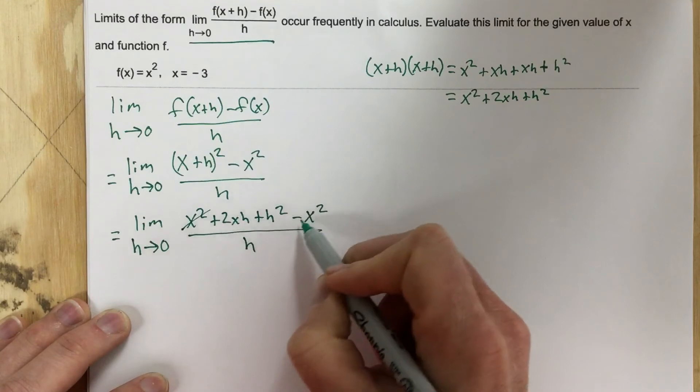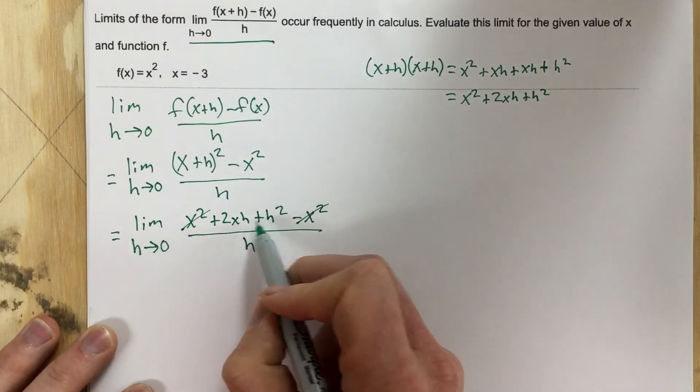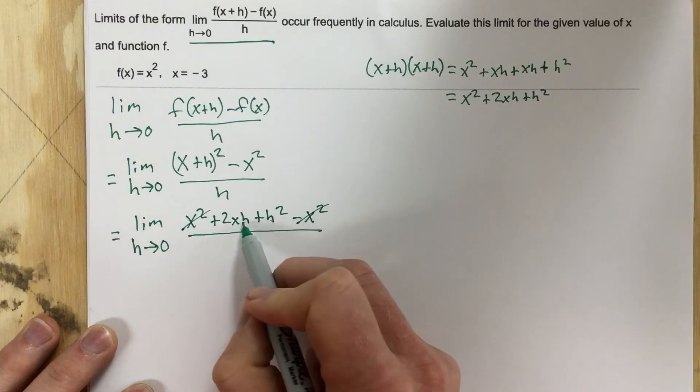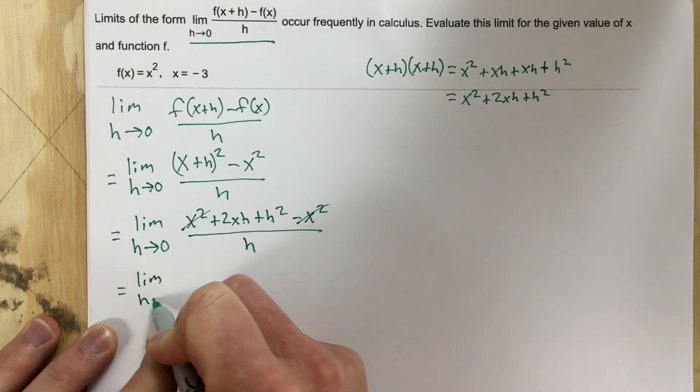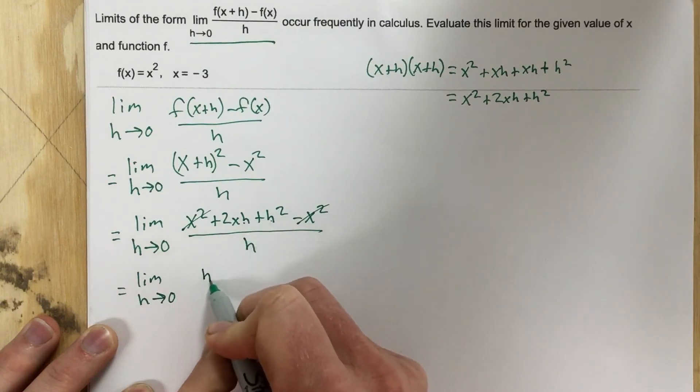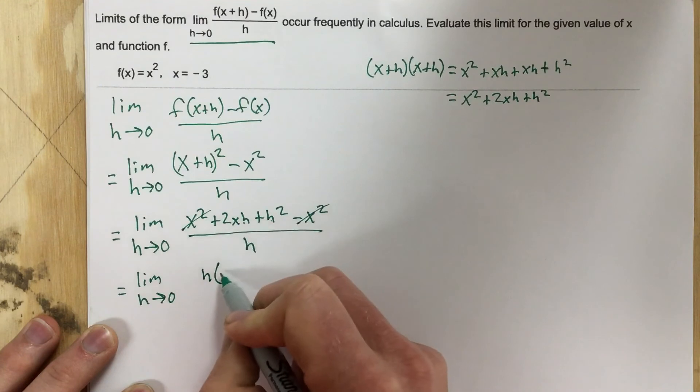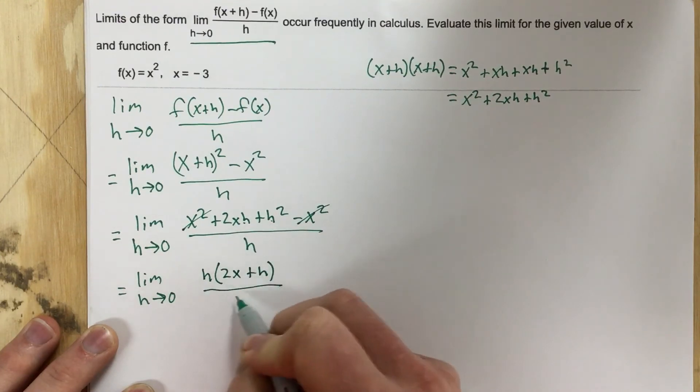The x squared and the negative x squared cancel, and then I can factor an h out of these two terms. I get limit as h approaches 0 of h times 2x plus h on top, and that's over h.